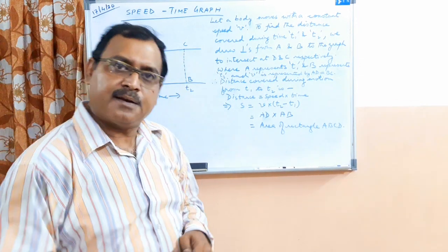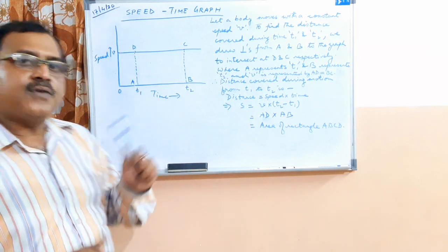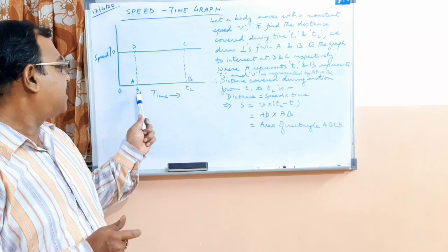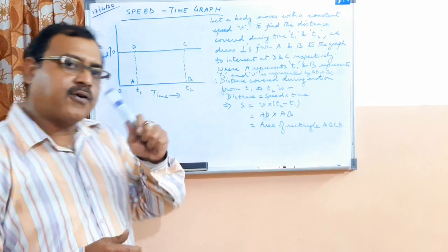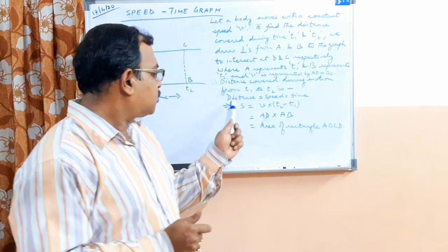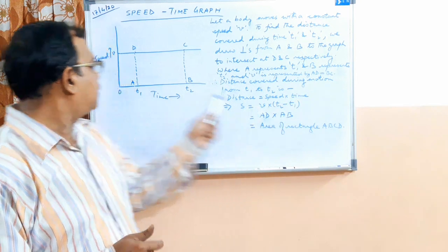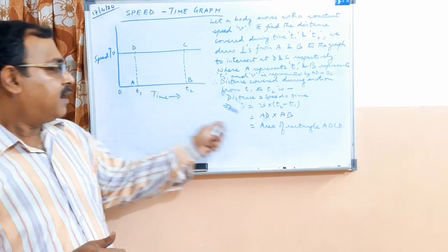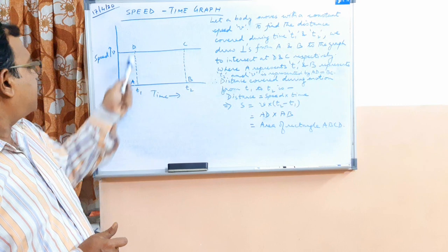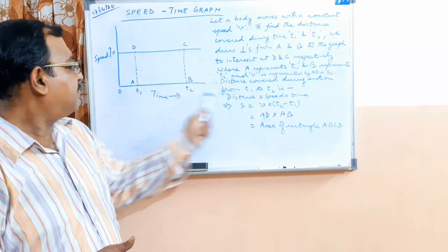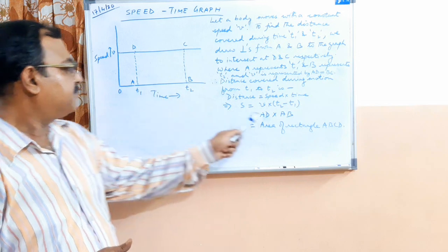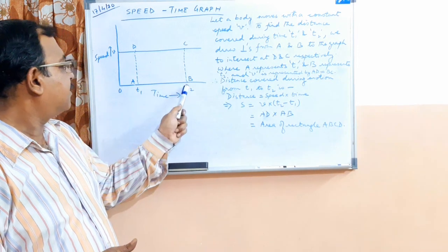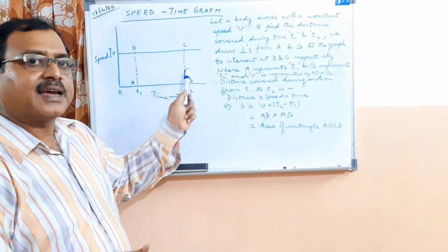If we want to find the distance covered by this body with a speed V between time t1 and t2, we use the formula: distance equals speed into time. Speed is V, and time here is t2 minus t1. Now V is represented by AD or BC, and t2 minus t1 is represented by AB. AD into AB — AD is the breadth and AB is the length — so this is the area of rectangle ABCD.